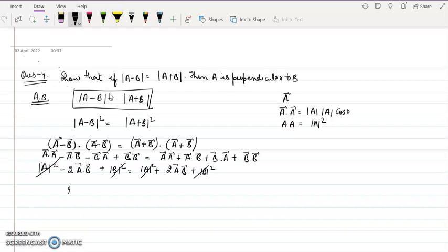So this is 2 a dot b plus 2 a dot b equals to 0. So this is 4 of a dot b equals to 0. Hence, a dot b should be 0.